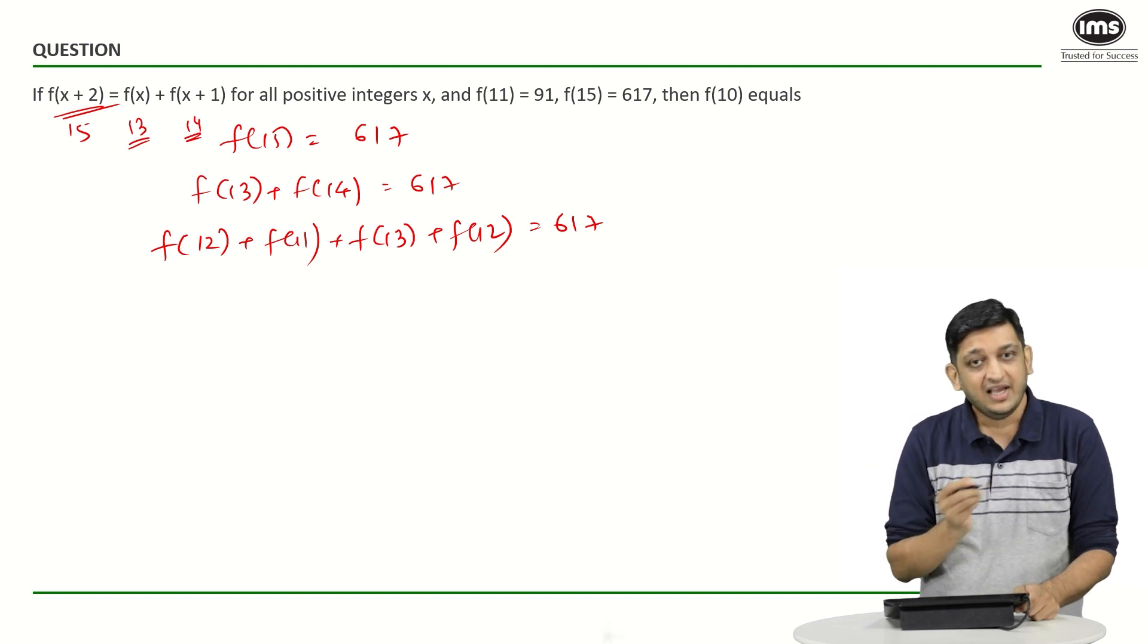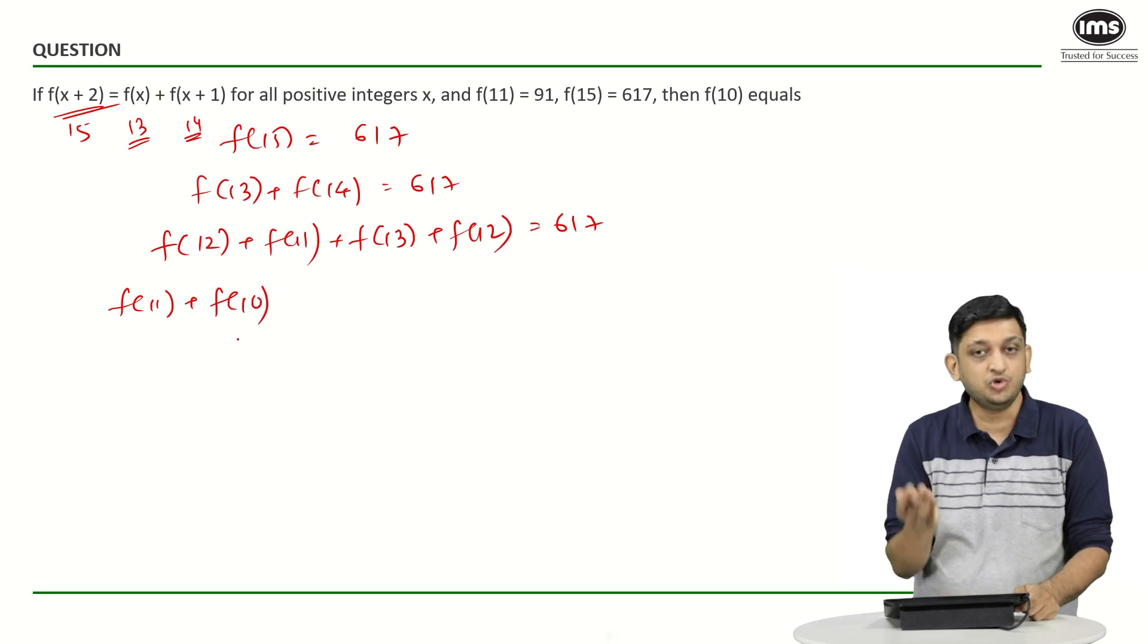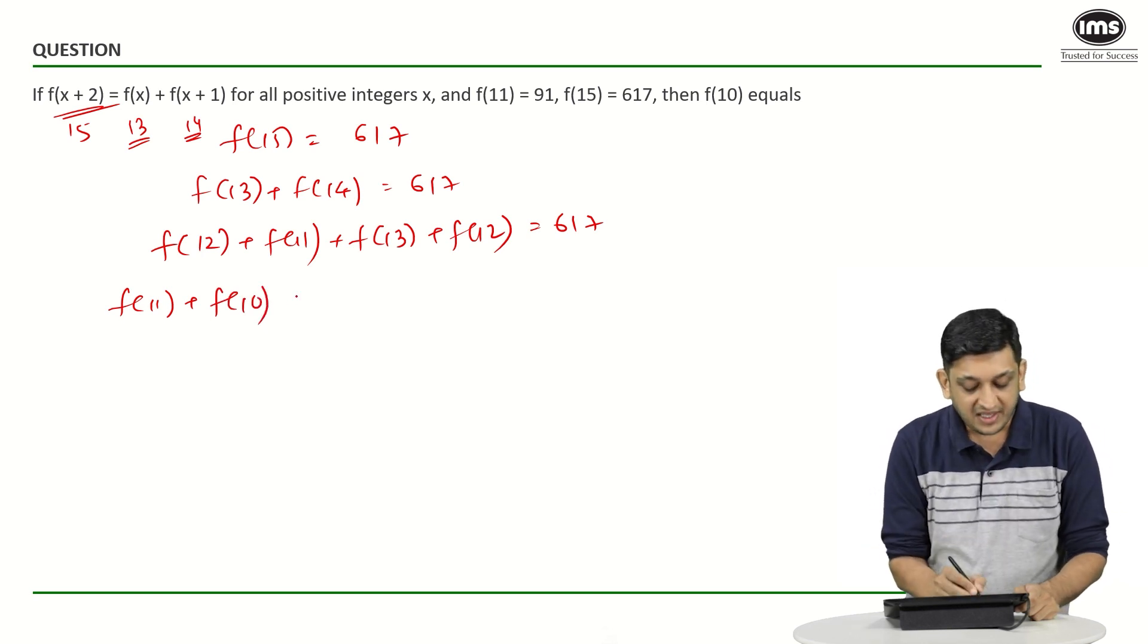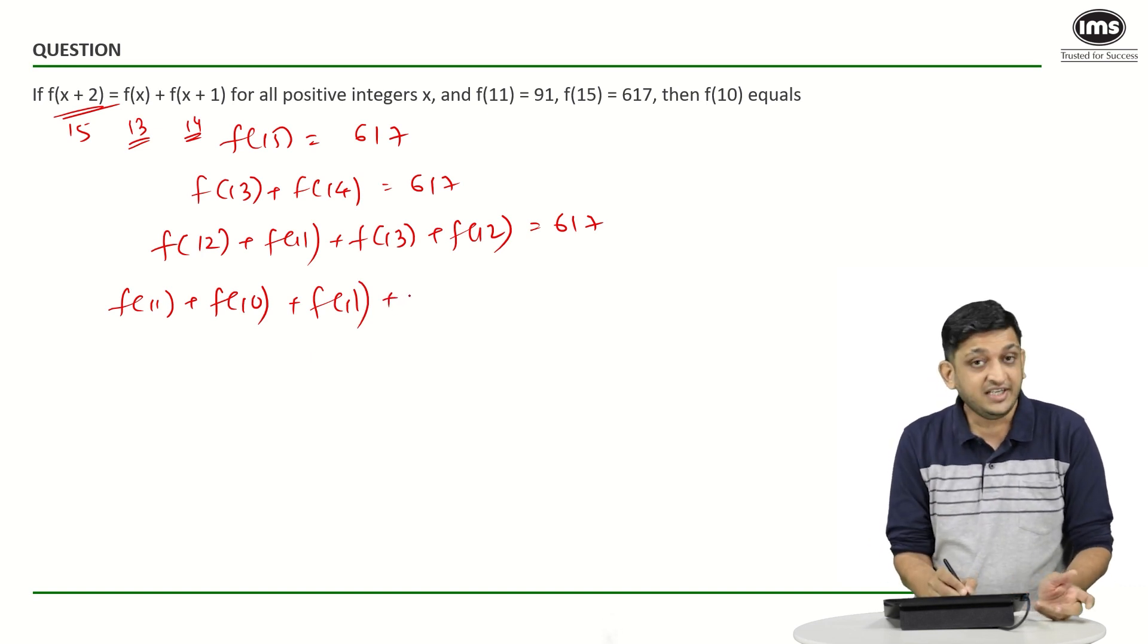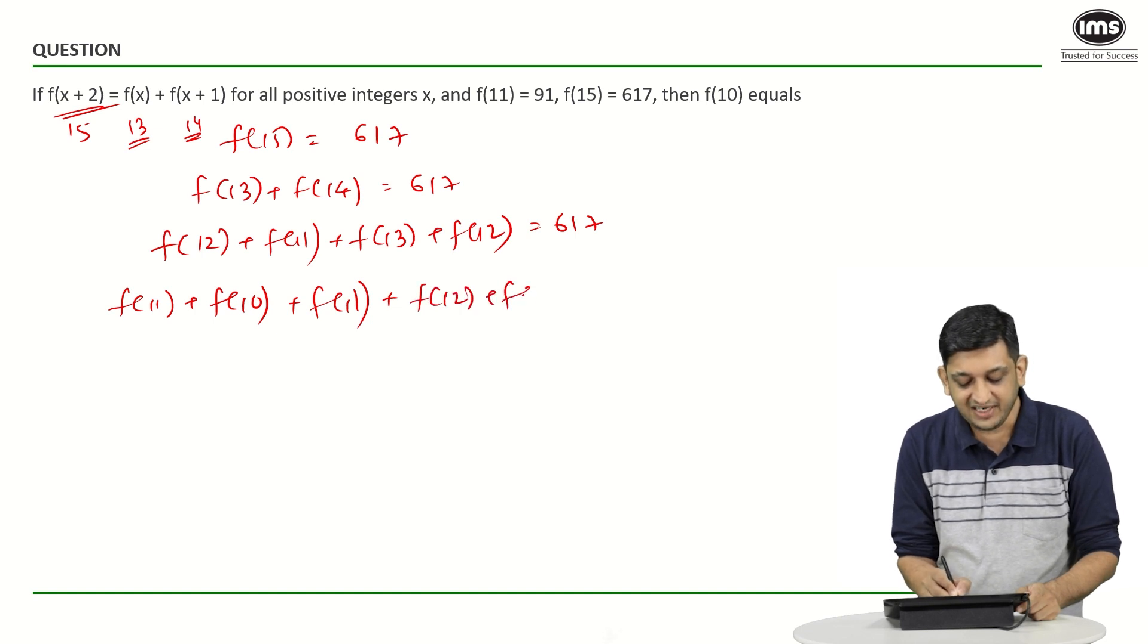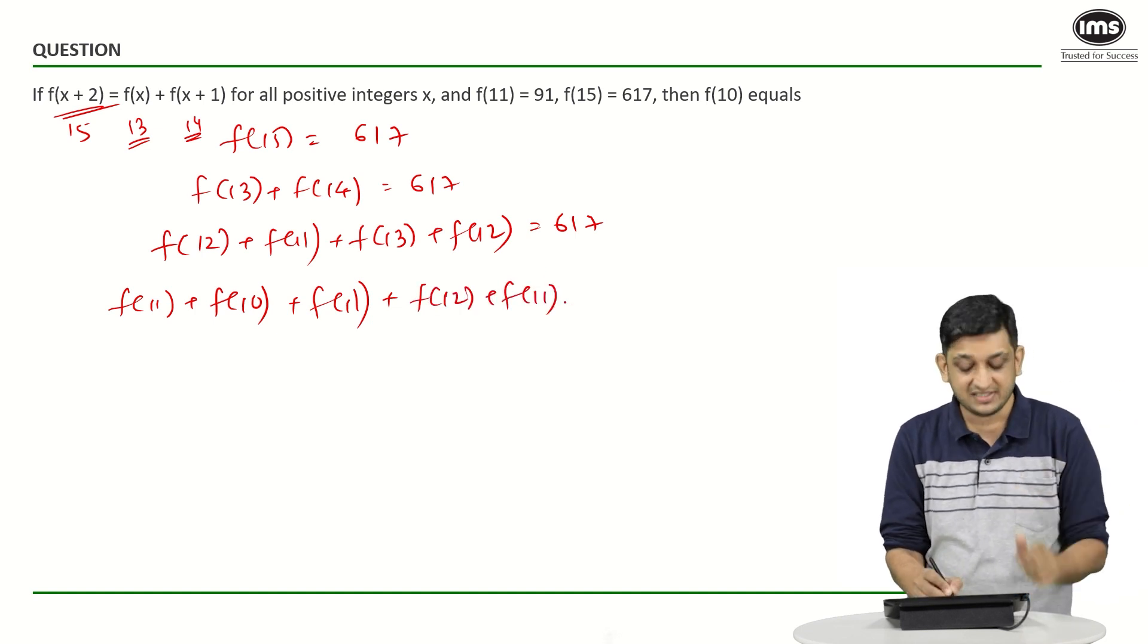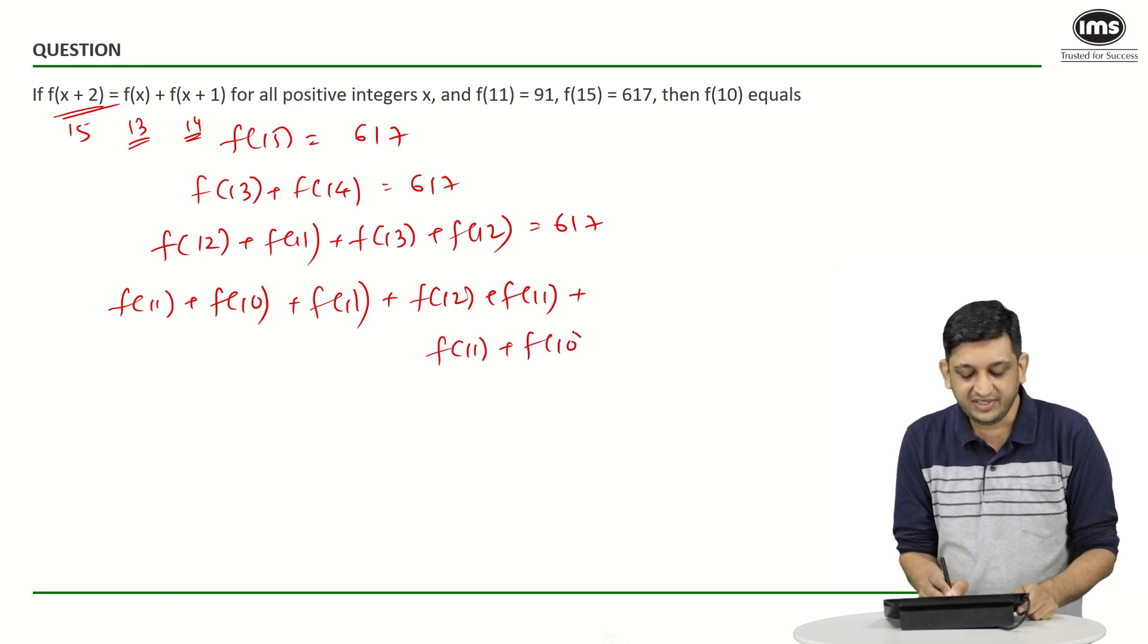What is f(12)? f(12) is nothing but f(11) + f(10), two preceding terms is what we need. f(11), we know the value, so we will keep it as is for the time. What about f(13)? f(13) is nothing but f(12) + f(11) from what we have seen in the previous step.